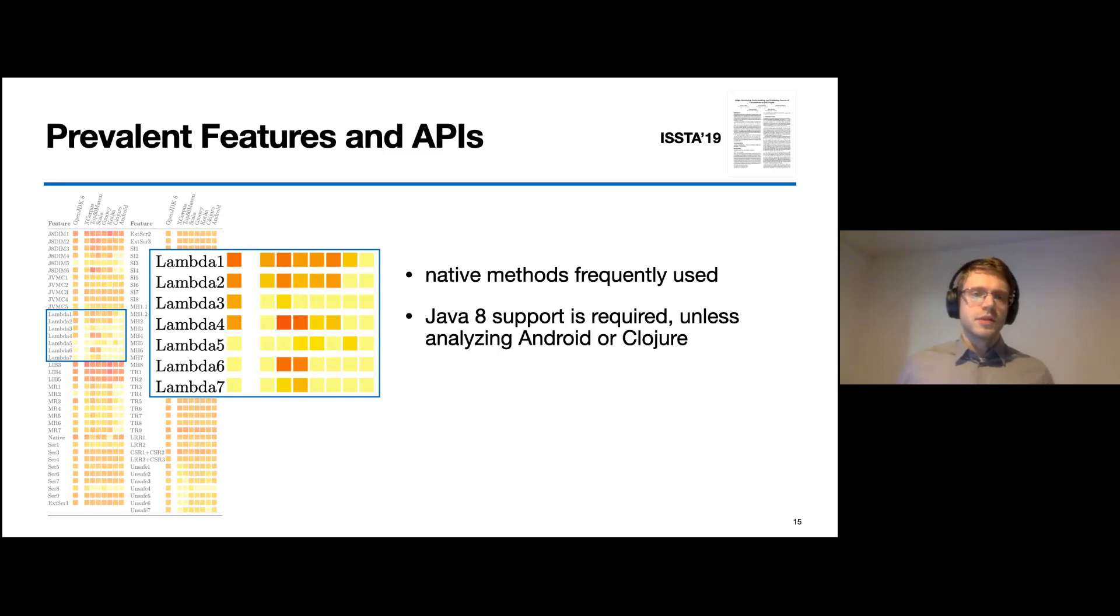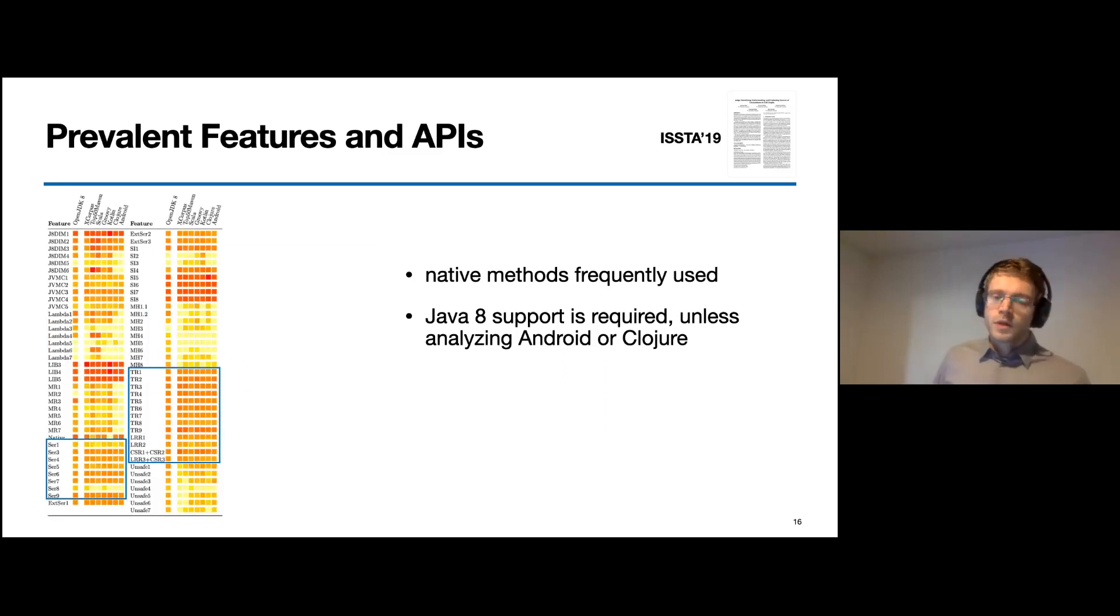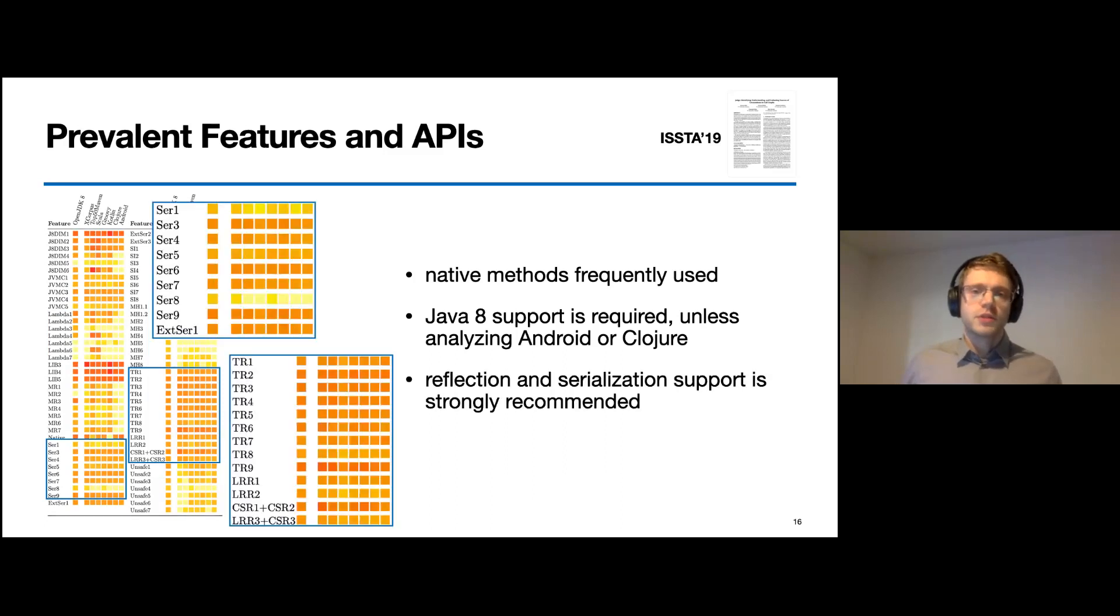Why is that? Java 8 is not used in all the programs, but actually we require support for it for most of the corpora, especially when we don't analyze Android or Clojure code. Also, APIs like serialization or reflection are frequently used across all corpora. Here, please note that the test cases TR1 to TR9 represent really simple reflection cases, where the string used in the API calls is immediately available. Hence, they can also be supported statically with reasonable precision. We strongly recommend to support reflection and serialization, at least partially.